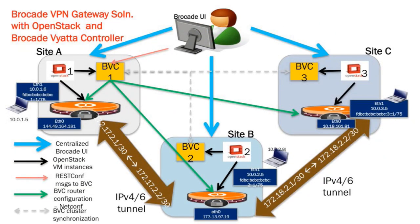Here's a busy picture of what it looks like. You have site A on the left, site B at the bottom, and site C — these are the three different sites. You have three different OpenStack instances, labeled one, two, and three. You also have the Brocade Vyatta controller, which is based on OpenDaylight, and these form a single logical cluster synchronized for configuration.